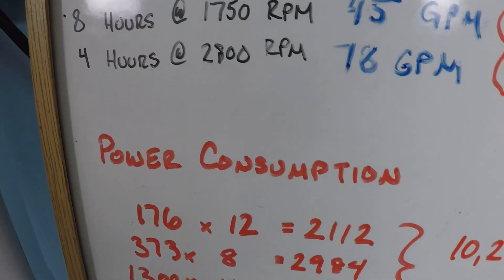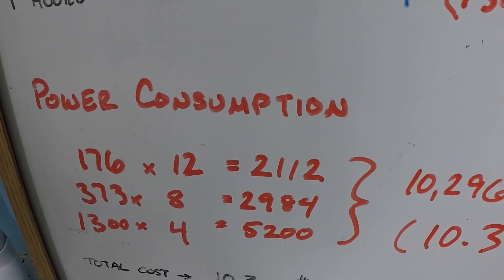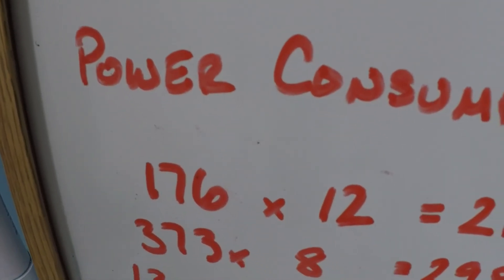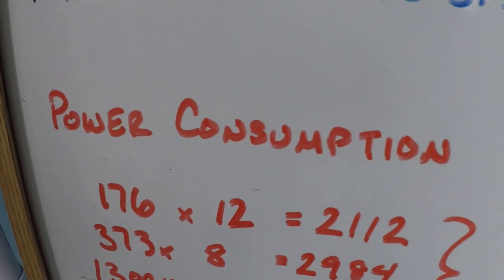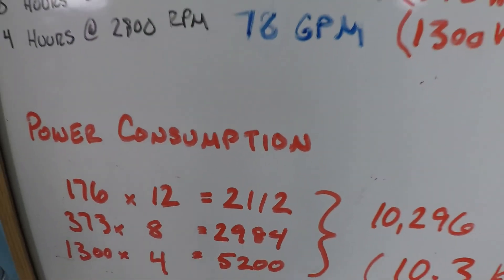And that's why with a variable speed pump the goal is to not turn it off. You want to run it all of the time, 24 hours a day, with a lot of those hours being at low RPM operation where you get quite a bit of filtered water for not all that much power consumption.